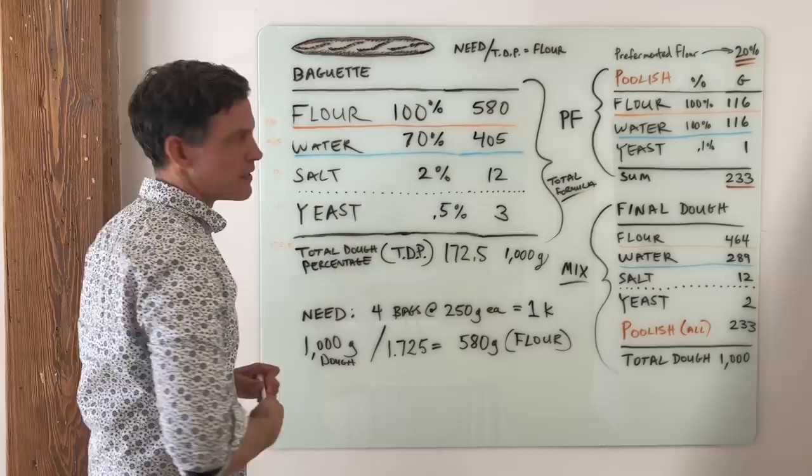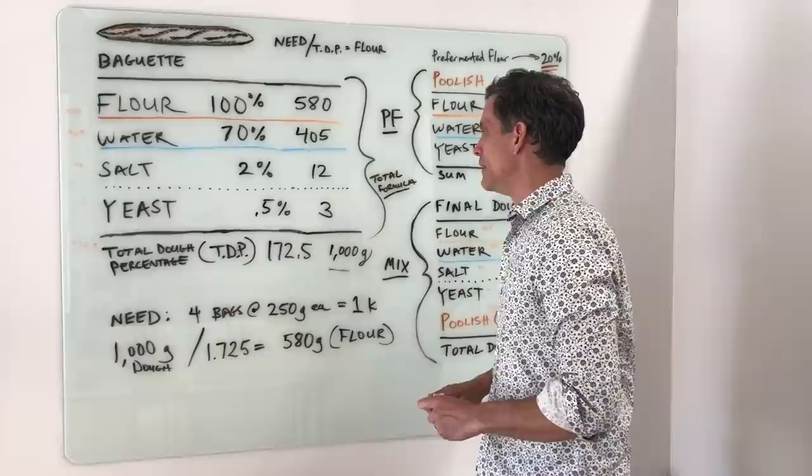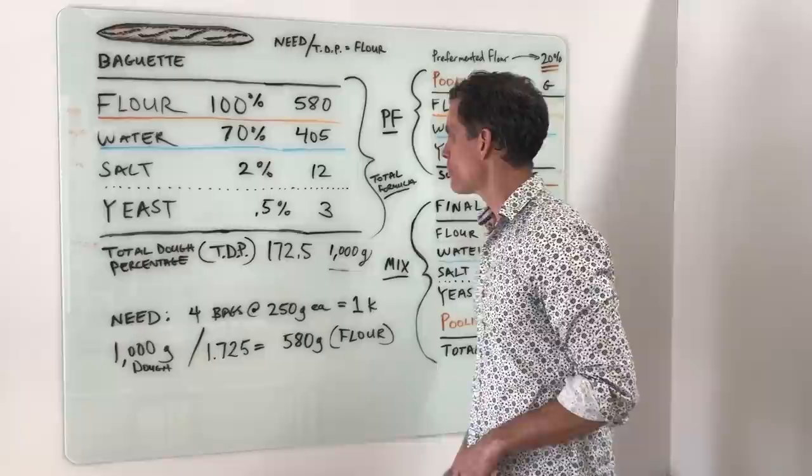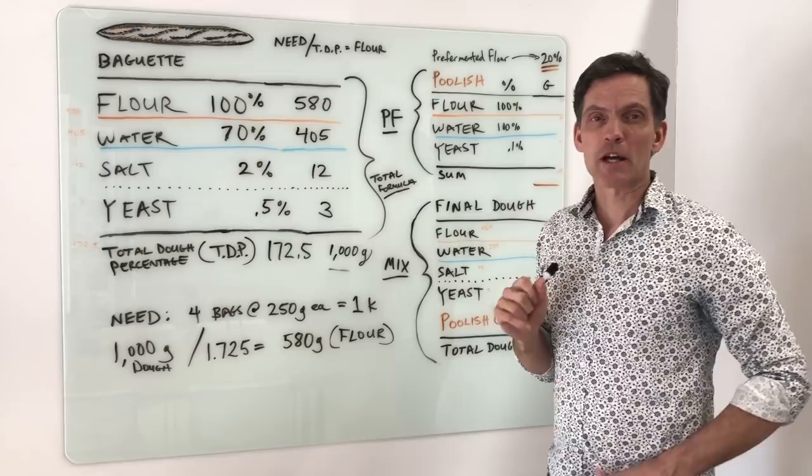Now, the next thing we're going to talk about are the pre-ferments. Okay, so we have our total formula. We went through our total dough percentage. We divided our need, which was 1,000 grams, by our total dough percentage. And that gave us our flour amount. We were able to do this multiplication. And so now we know what the total batch looks like.